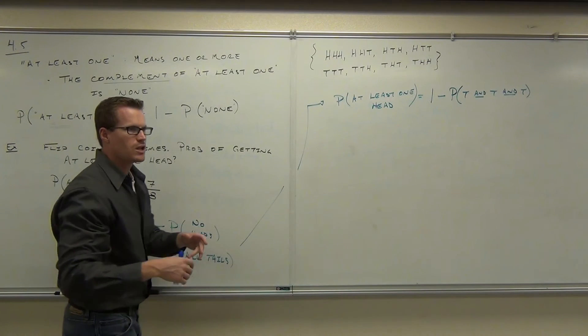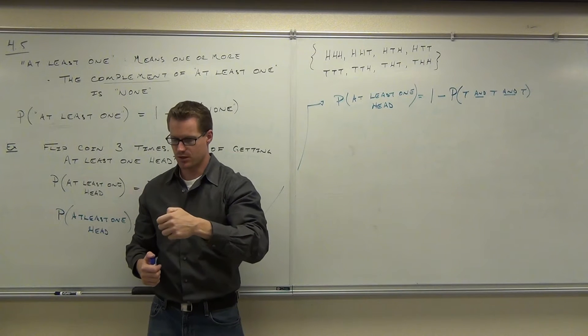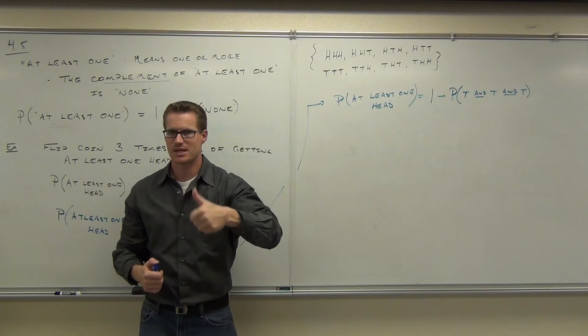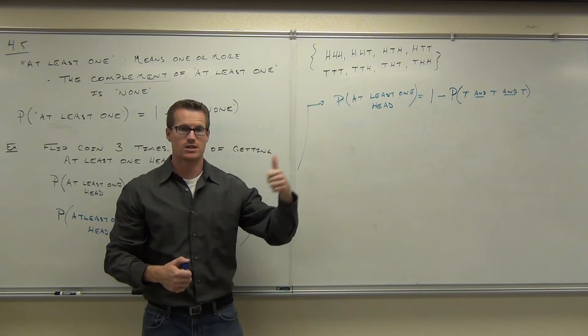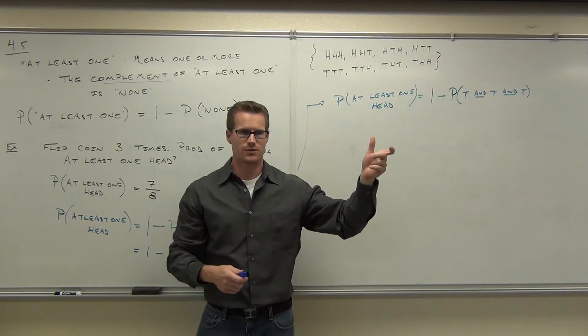You're getting all tails. If you get all of something, that means every time you repeat the procedure, you're getting that same outcome, right? That translates to a tail, and then a tail, and then a tail, for however many flips of the coin that you have.